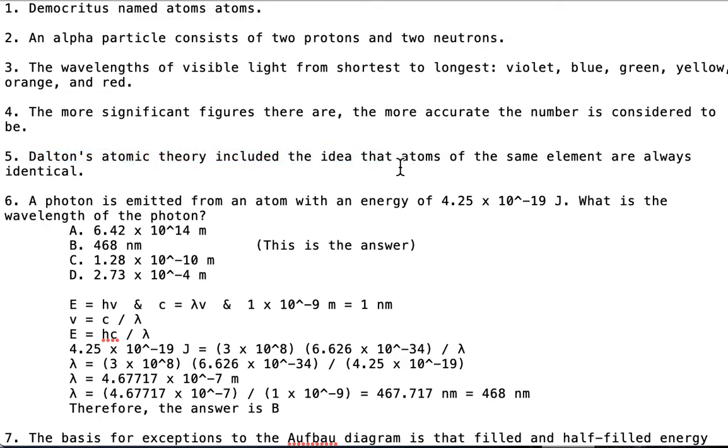A question: A photon is emitted from an atom with an energy of [given value]. What is the wavelength of the photon? Options A, B, C, D. The answer is B.